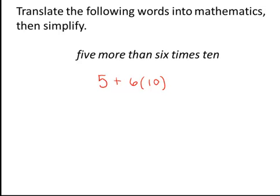We can now simplify remembering our order of operations. We do the multiplication first. Six times ten is sixty, and then five plus sixty equals sixty-five.